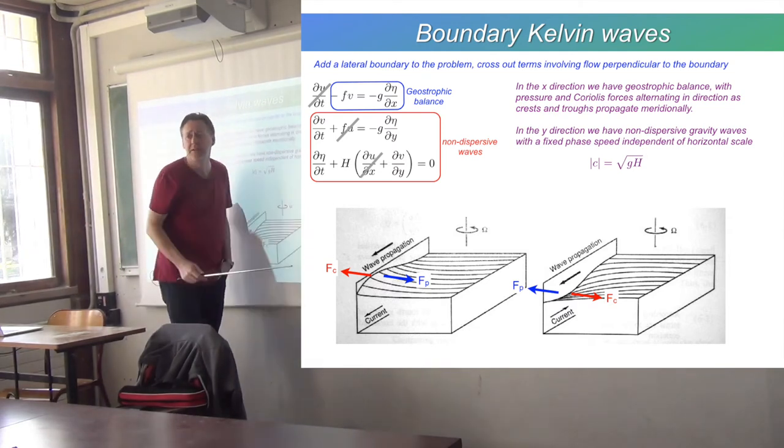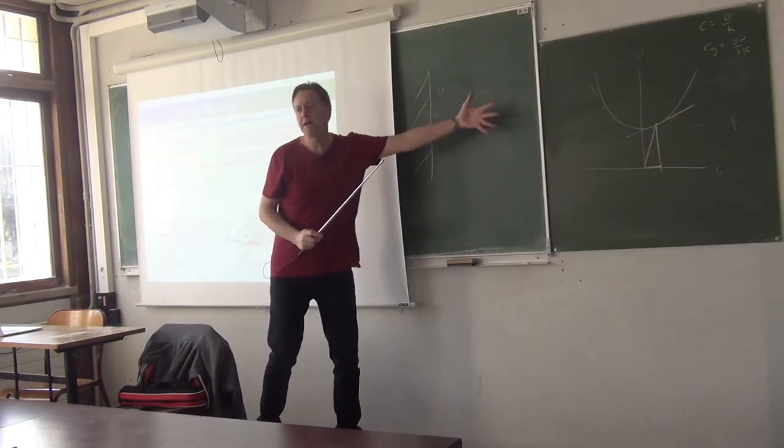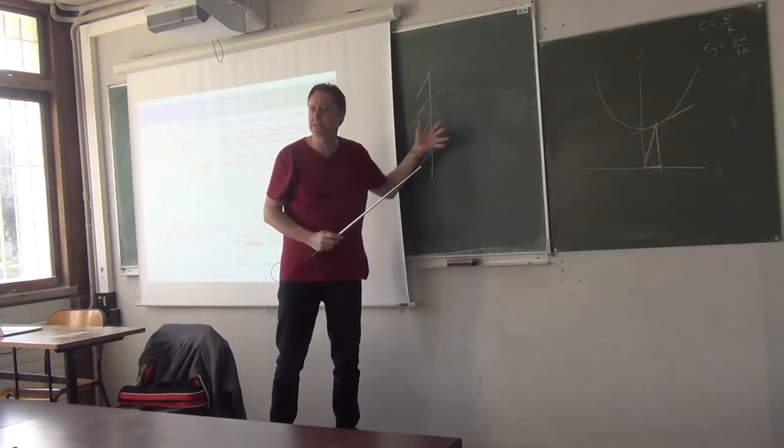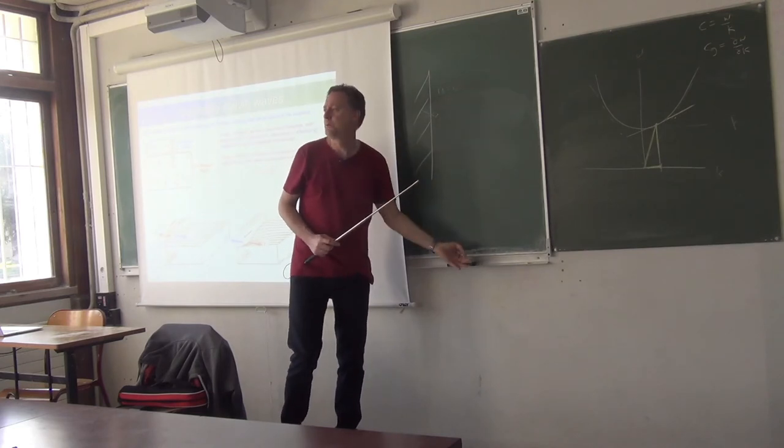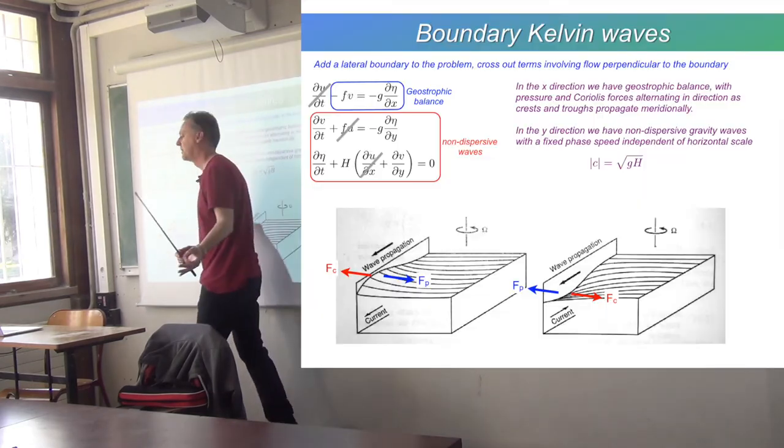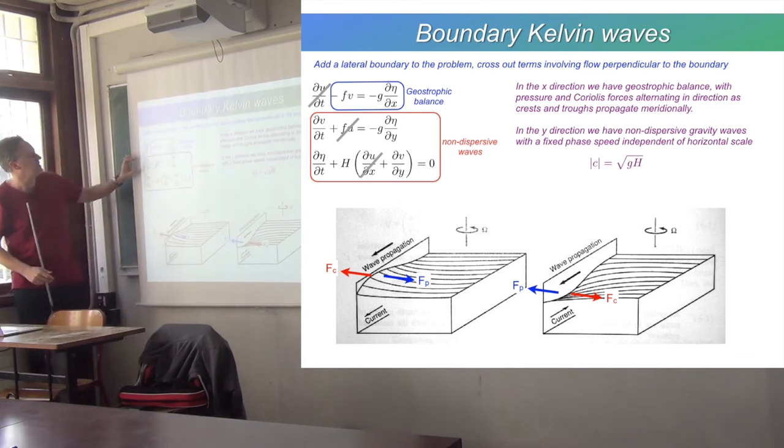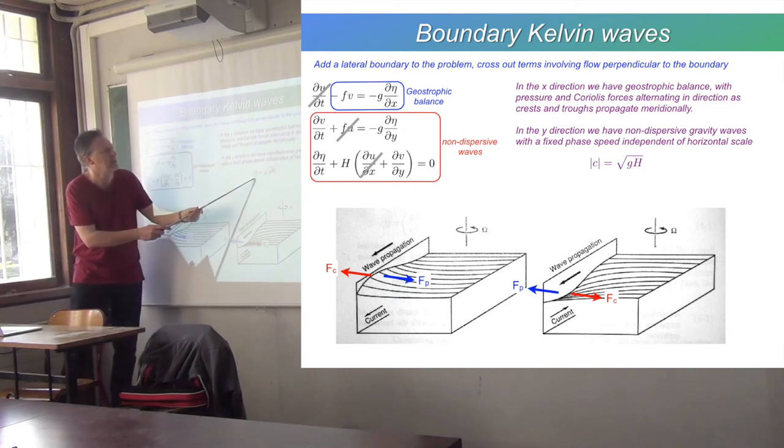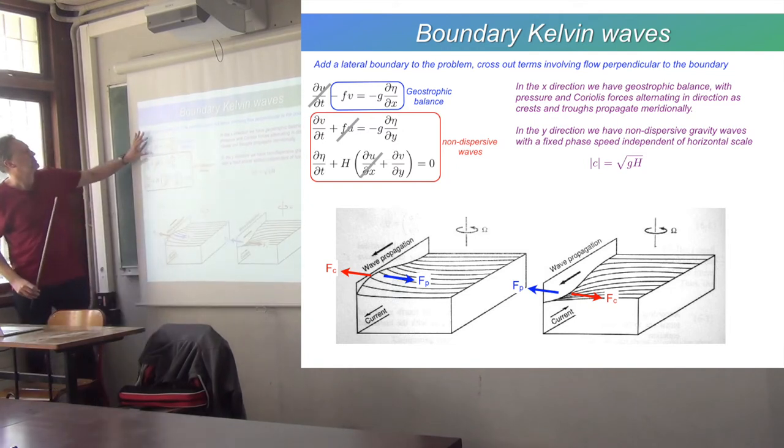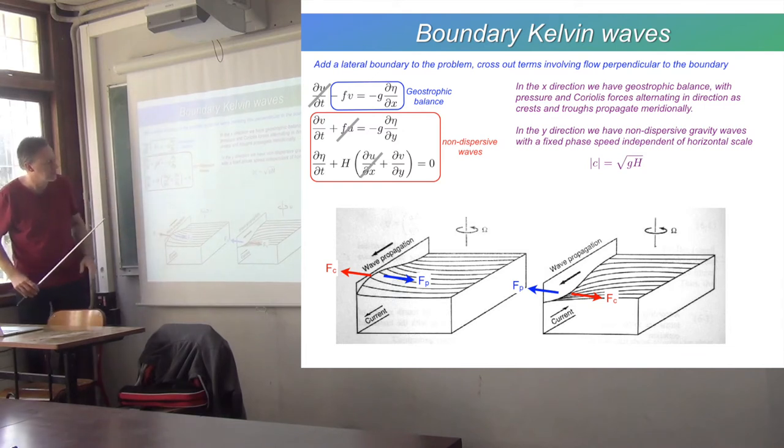This is non-dispersive waves moving north or south up and down that boundary. So in the cross-boundary direction we've got geostrophic balance; in the north-south direction we've got propagating waves. These two equations taken together lead us directly to the same simple non-dispersive waves that we had from the start, with phase speed equal to √(gh). This geostrophic balance acts across the wall.